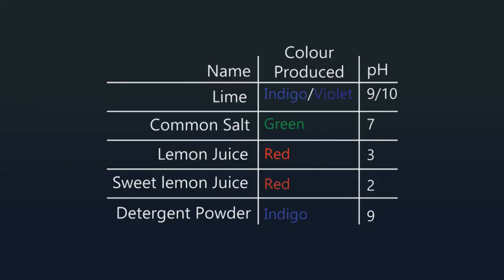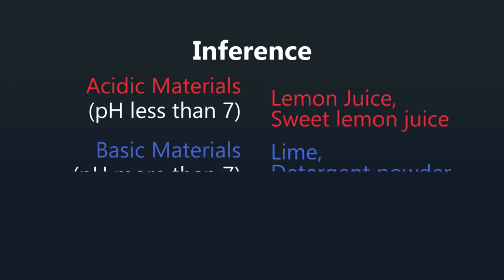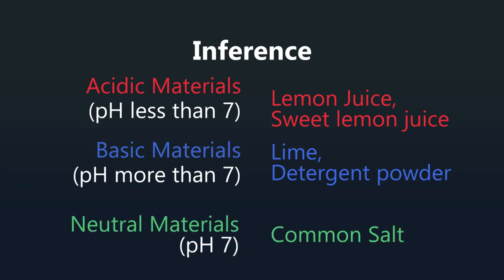Observation: we recorded the pH of each material from this. Inference: acidic materials with pH less than 7, basic materials with pH more than 7, neutral materials with pH equal to 7.